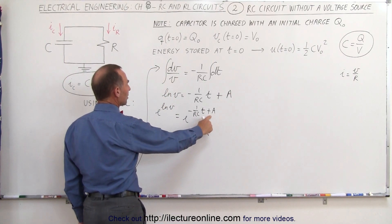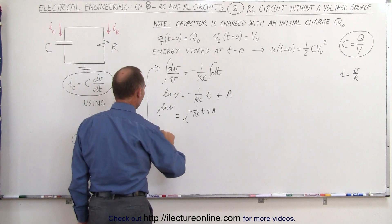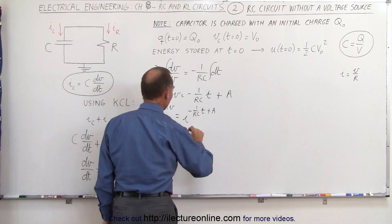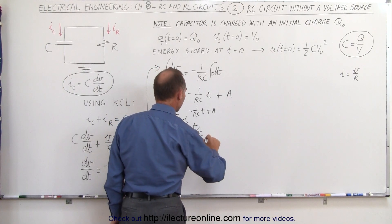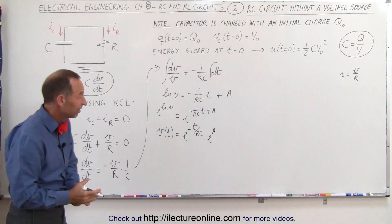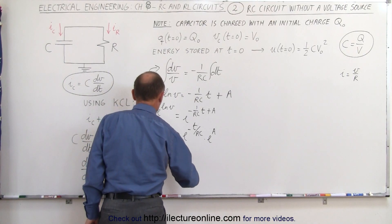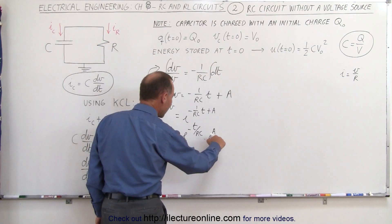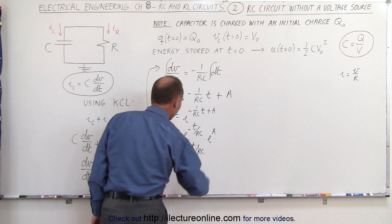We can separate the exponent, and of course e to the natural log of V becomes simply V. So V as a function of time equals e to the minus t over RC, times e to the A. Now e to the A is a constant — let's call that constant B and place it in front, so V as a function of time equals B times e to the minus t over RC.